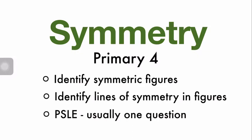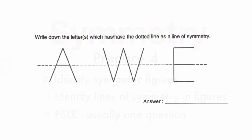Coming back to PSLE, usually there's one or not more than two questions that deal with this topic, and it's a giveaway mark. It's a question that you have to score. So let us look at the first question here. It says: write down the letters which has or have the dotted line as the line of symmetry. Do not be tricked because this question wants you to observe this specific line.